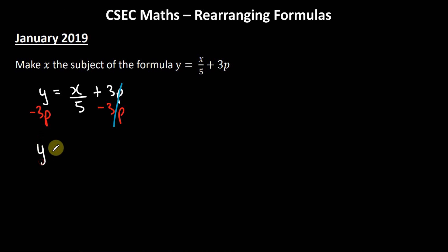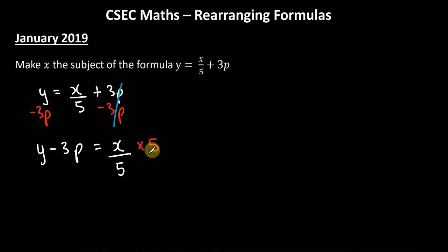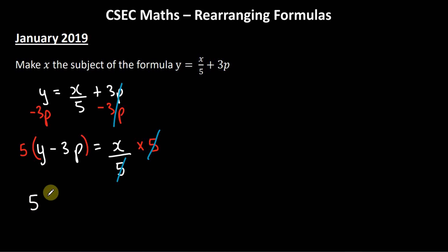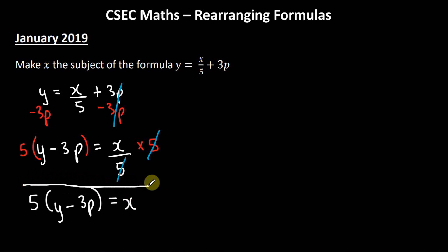We're left with y − 3p = x/5. Next, we're dividing by 5, so we multiply by 5 to get rid of it. Because the left-hand side has more than one term, we put it all in brackets, then multiply by 5 to show we're multiplying everything on the left-hand side by 5. The 5 cancels 5, and we're left with 5(y − 3p) = x. This is our solution — we have made x the subject.